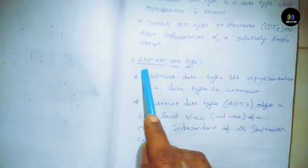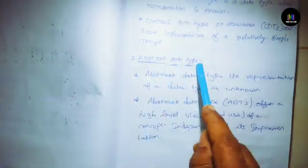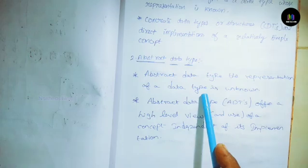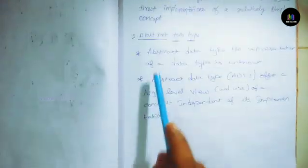Abstract data type: First one - Abstract data type, the representation of a data type is unknown.